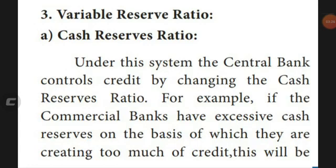When the central bank wants commercial banks to increase the volume of credit, it lowers the cash reserve ratio. With a lower CRR, banks can expand lending. For example, if the reserve ratio is reduced from 20% to 10%, then on a 1,000 rupee deposit only 100 rupees need to be kept as reserve instead of 200 rupees, allowing banks to give more money as loans to the public.